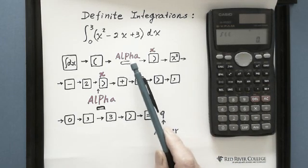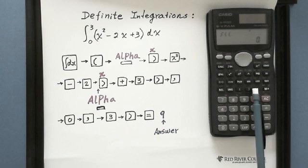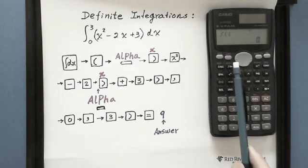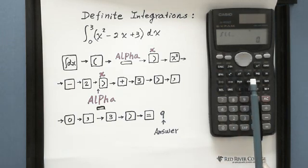And when we enter the x, we need to use the red x. Before entering x, we need to hit the alpha button, which is red, working with red.